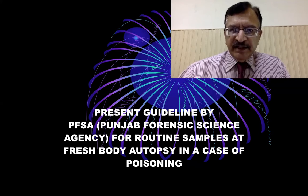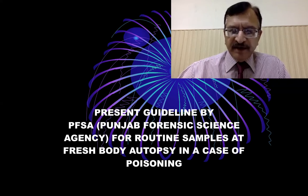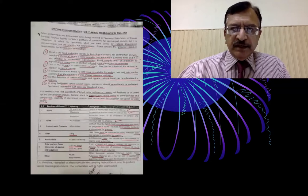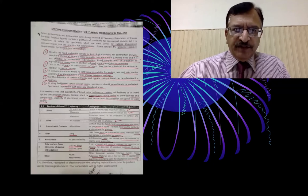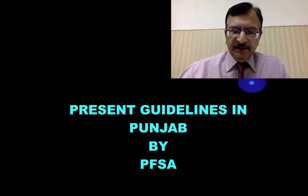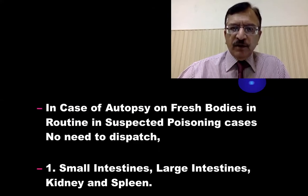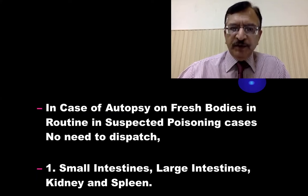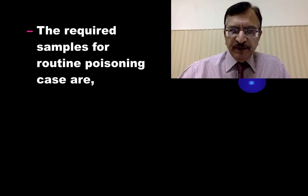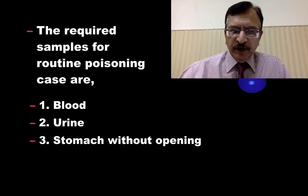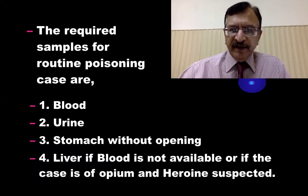Punjab Forensic Science Agency in the province of Punjab, Pakistan, has now issued new guidelines. If we suspect a case of poisoning, they issued a notification — this is the picture of the notification. The present guideline states that in a case where poisoning is suspected in fresh bodies, the previously required small intestine, large intestine, and kidneys no longer need to be dispatched. The required samples for routine poisoning cases are now blood, urine, stomach without opening, and liver if blood is not available or if opium or heroin poisoning is suspected.